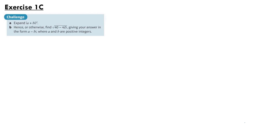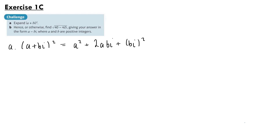Our first question comes from exercise 1c, and part a asks us to expand (a + bi) squared. Using the formula for (a + b) squared, we have a squared, then 2 times a times bi, and then bi all squared. So we have a squared plus 2abi, and then i squared equals minus 1, so that term becomes minus b squared. Collecting the real and imaginary terms we have a squared minus b squared plus 2abi.